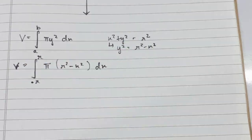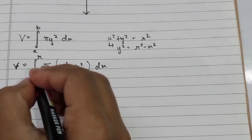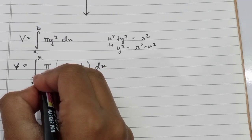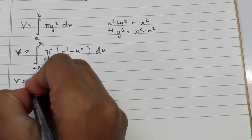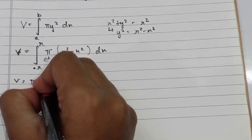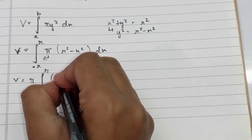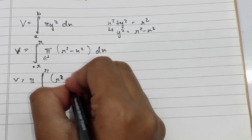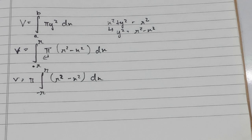By applying linearity, we can factor out π, so we get V = π times the integral from −r to r of (r² − x²) dx. Now let's integrate this.